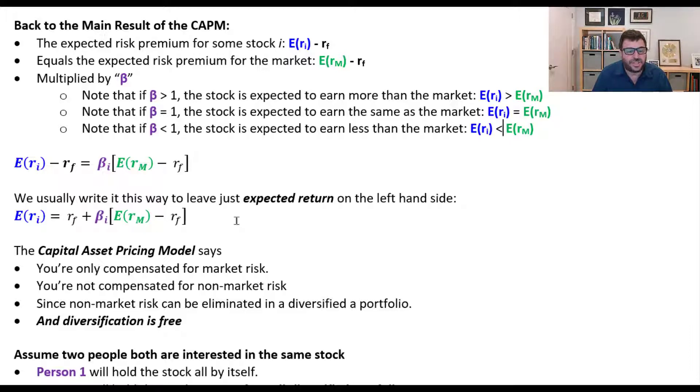So the capital asset pricing model says you are only compensated for market risk. You are not compensated for non-market risk because non-market or idiosyncratic risk can be eliminated in a diversified portfolio and diversification is free.